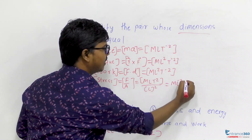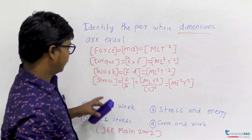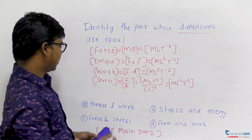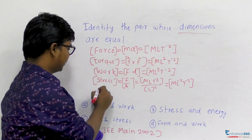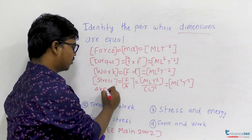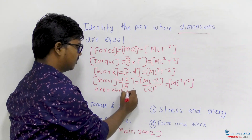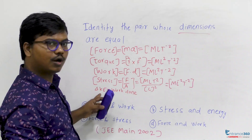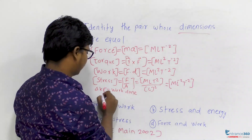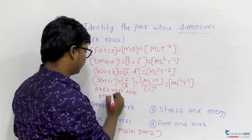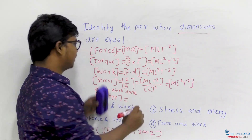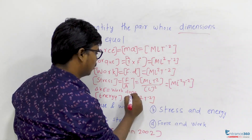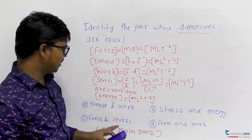For energy, using the work-energy theorem: delta KE equals work done. Therefore, the dimension of kinetic energy equals the dimension of work, which is M L² T minus 2.